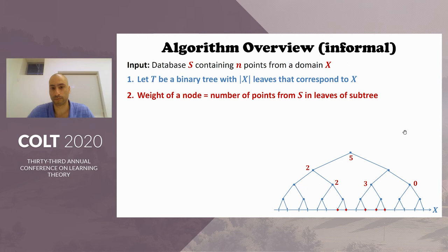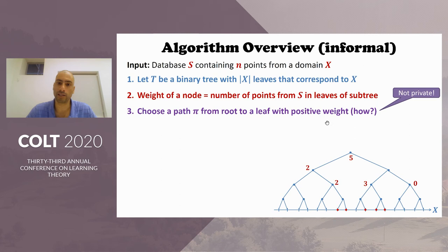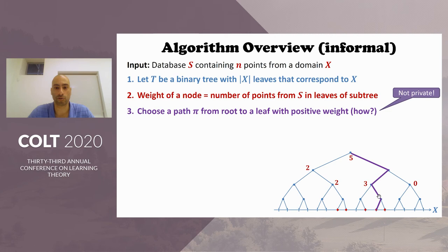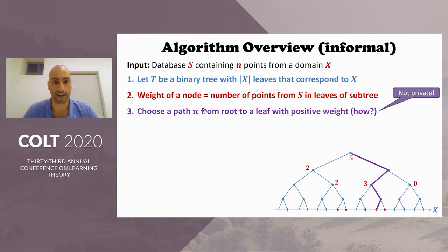Next, we choose a path from the root to a leaf with positive weight — call this path pi. By how weights are defined, a leaf with positive weight corresponds to a point in the multiset S, so this path ends at a data point. If we were able to construct this path pi in a way that satisfies differential privacy, then since it ends at a data point, it would be in the convex hull and that's what we want.